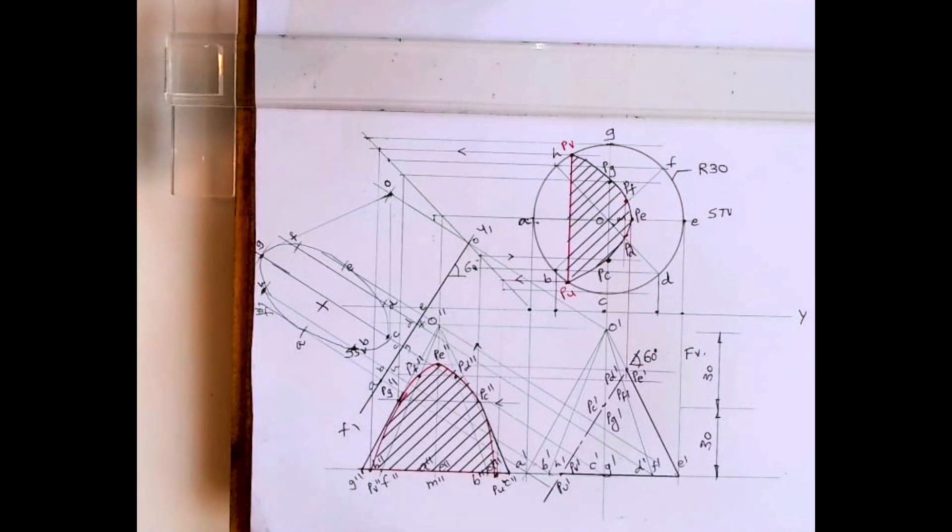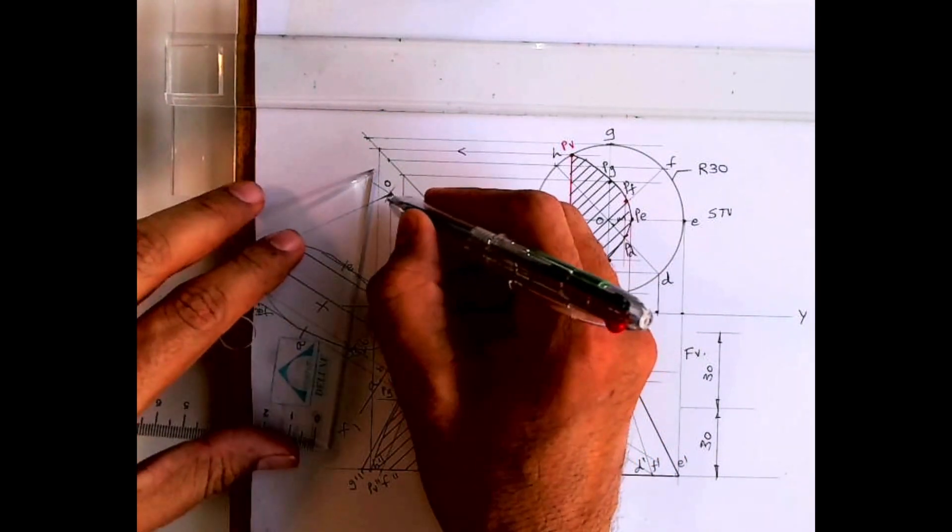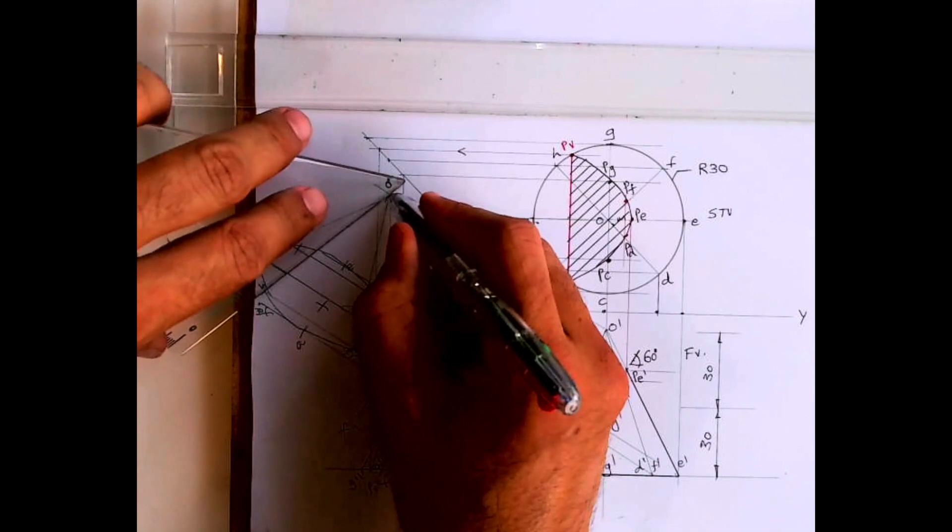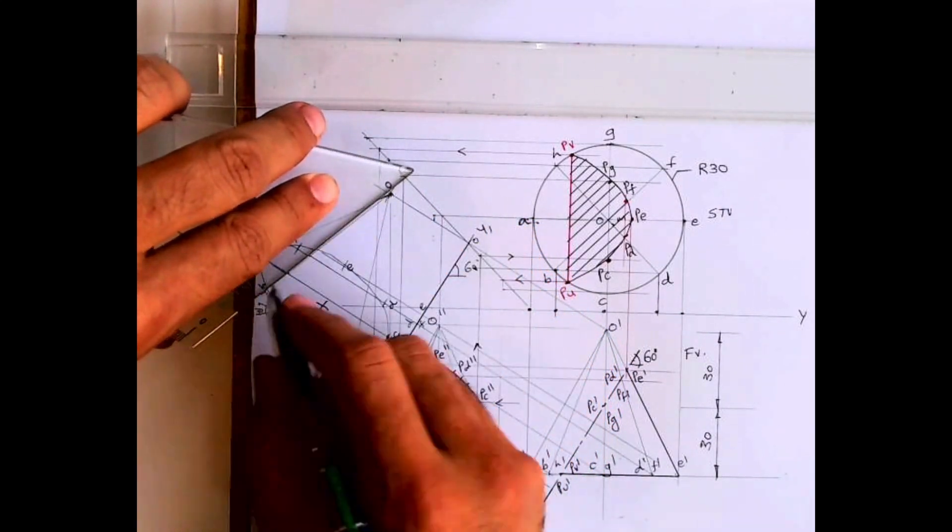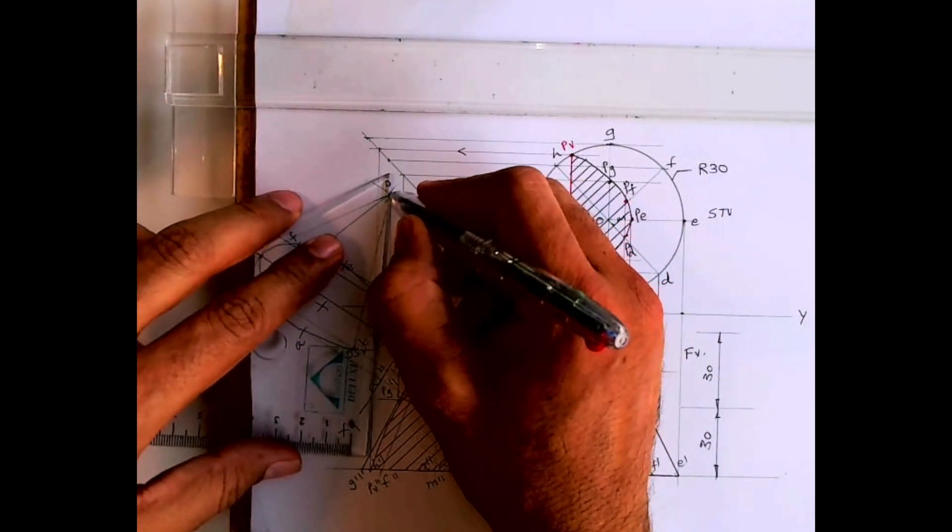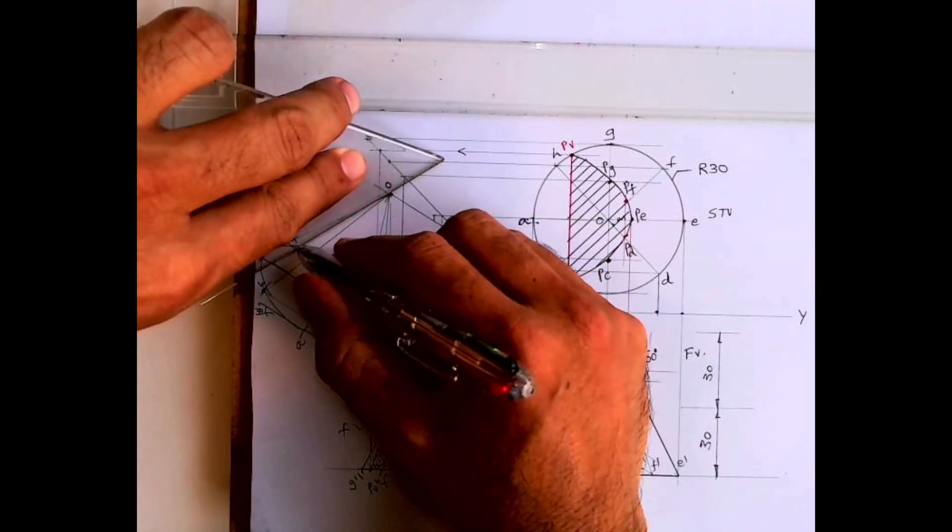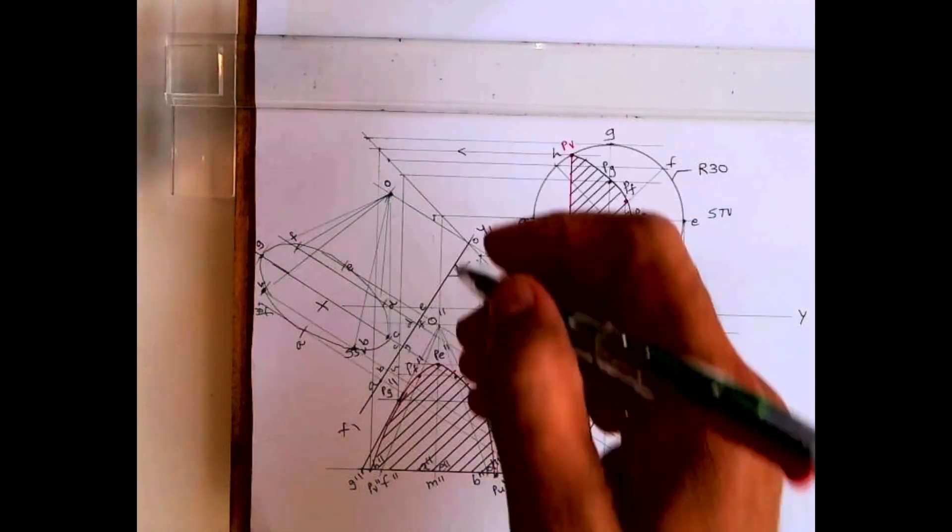And this inside portion like c, d, e, f, g, h will be dotted because that you can't see. What I'm doing right now, I'm joining all these generators. See, all the generators are imaginary generators, so all will be light, it won't be dark. We are doing this to project cut points.